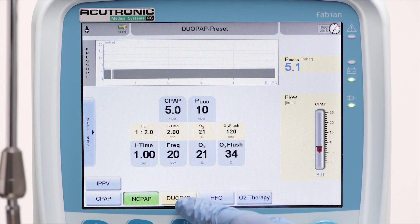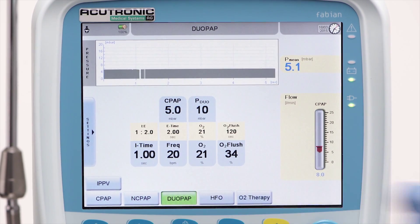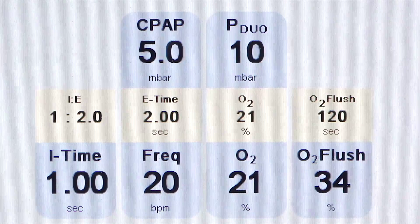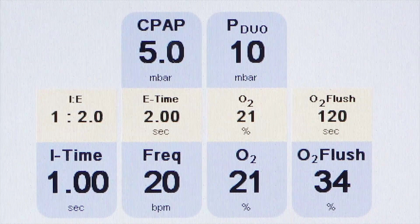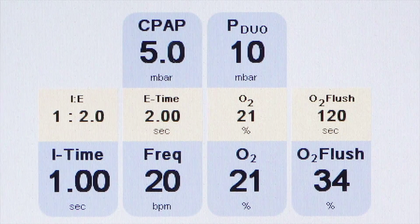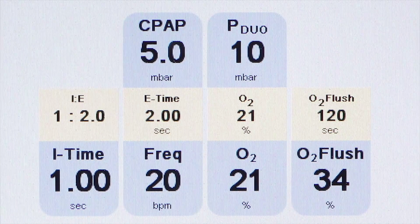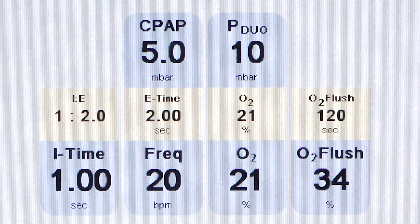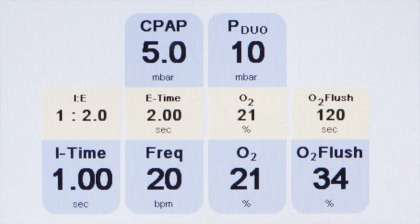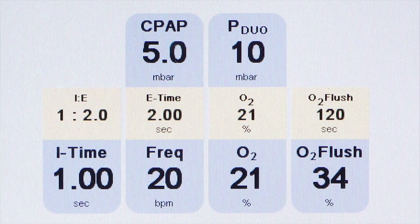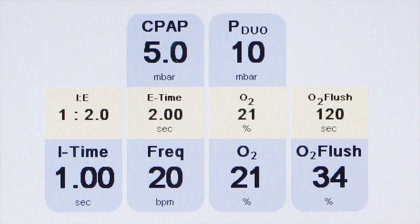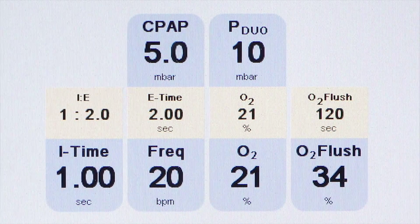In DUO-PAP, the following parameters need to be set: the CPAP level, the P-DUO upper pressure level, the inspiratory time, the frequency of the bilevel transitions per minute, and the O2 and O2 flush as needed.